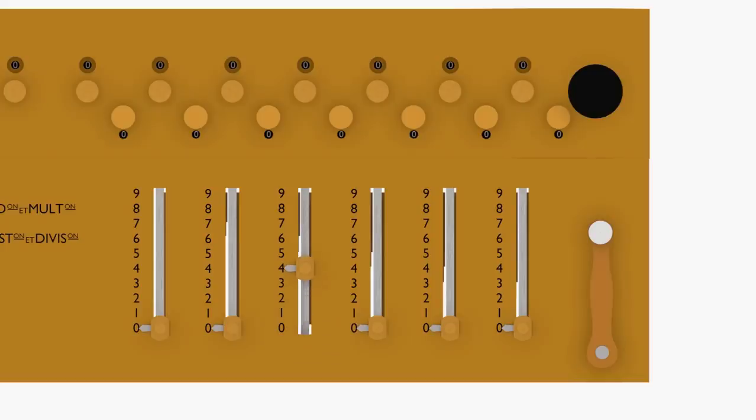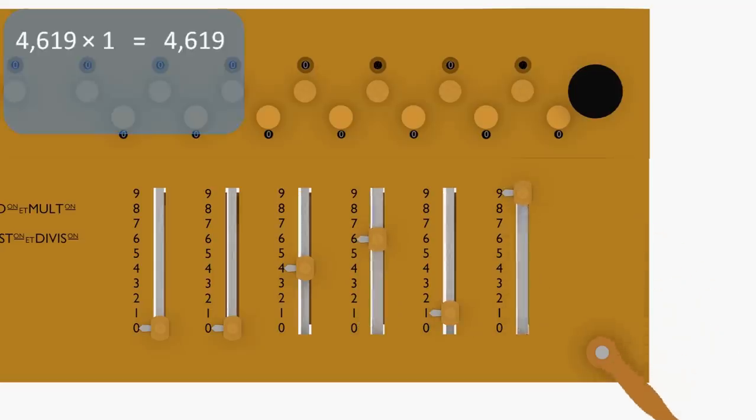First, we set the input knobs to 4,619. Then, we turn the crank once.